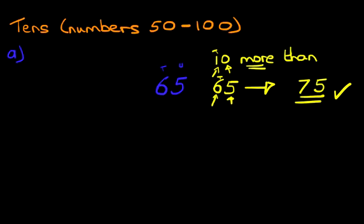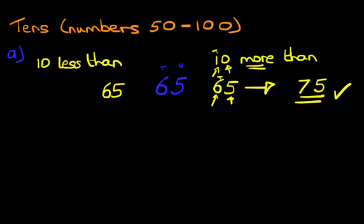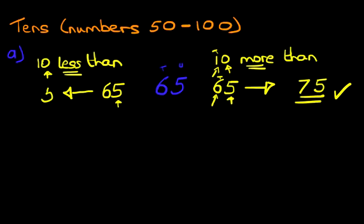Now, how about this side on the left? We're going to do 10 less than. So 10 less than 65. First, let's write the number down: 65. Are we going to go forwards or backwards? Well, it's less than, so therefore we are going backwards. In the units we have 5, and in the number 10 the 0 is a unit. So therefore, 5 is not going to go back by anything — it's going to go back by 0. So 5 remains 5.